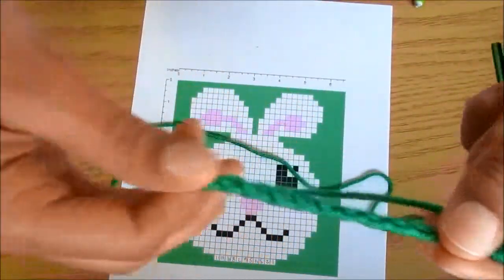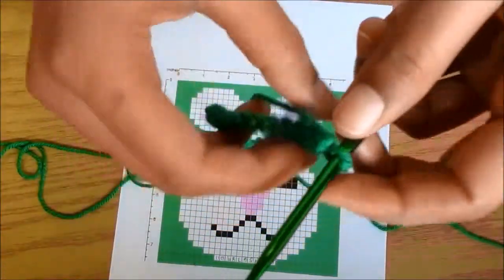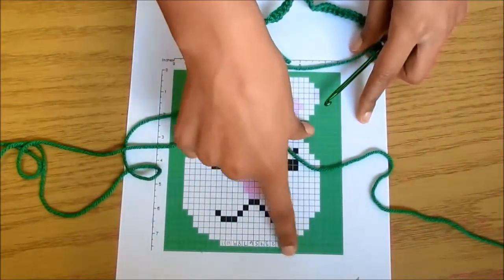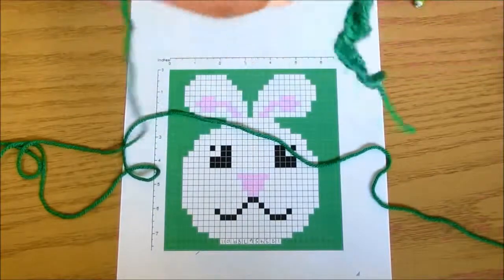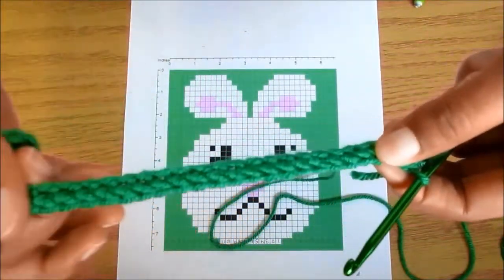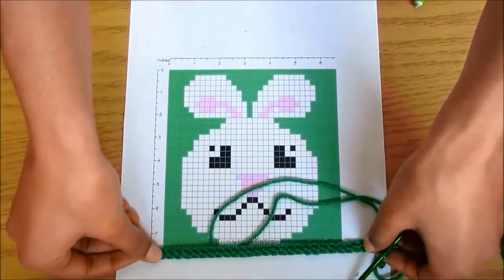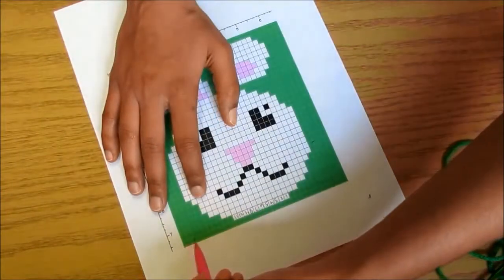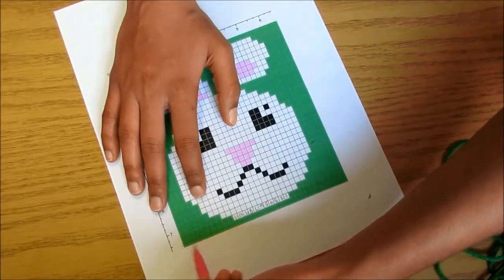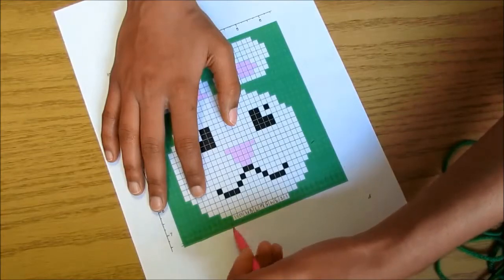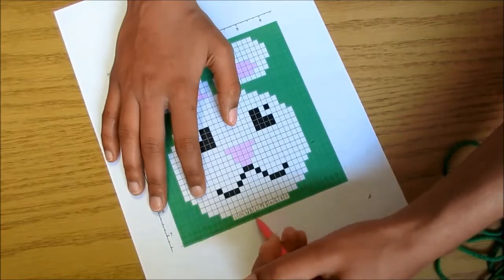So there's our basic chain of 32 with our G hook. Then we're going to do the first row, which is all green. Okay, so we finished our first row of the pattern, this first green row.